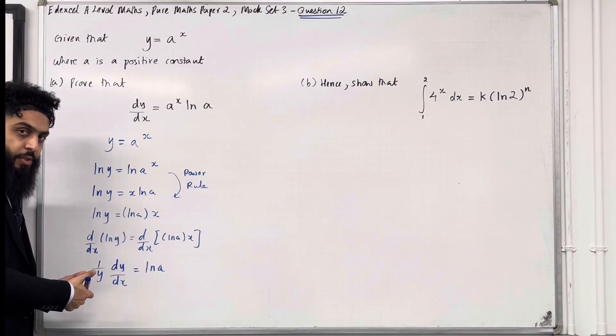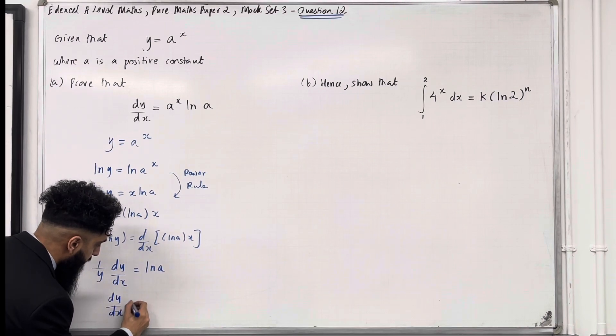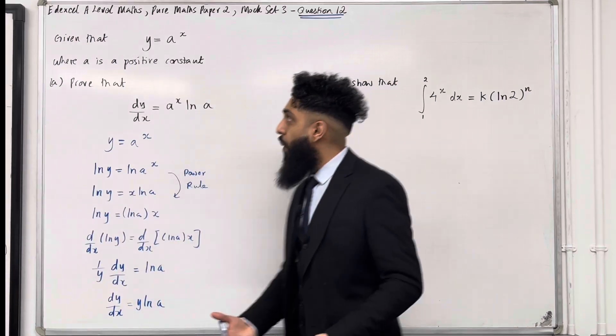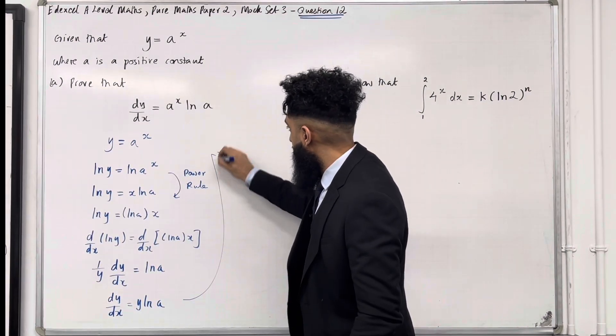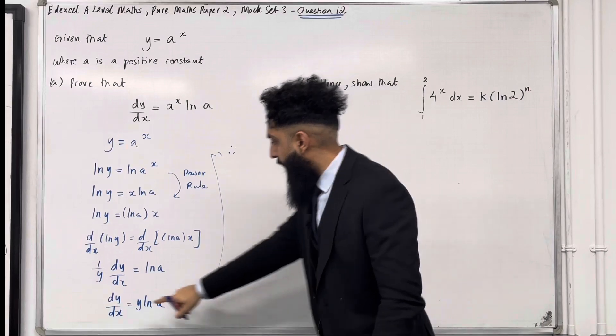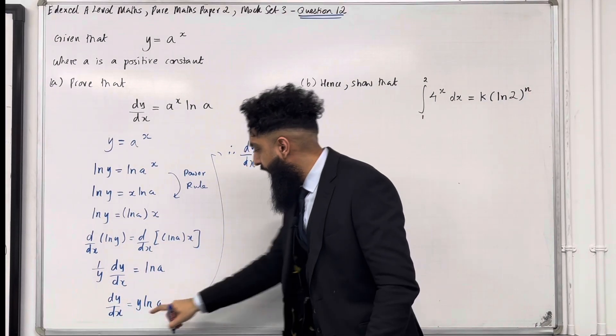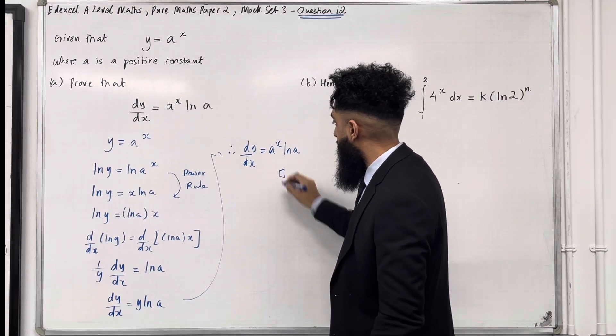Okay, so now I can make dy over dx the subject. So I've got dy over dx is equal y ln a. But I know that y is equal a to the power x. Therefore, my dy over dx is precisely a to the power x ln a. End of proof.